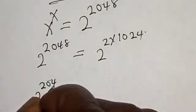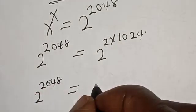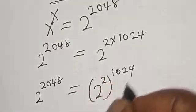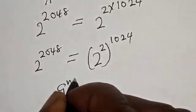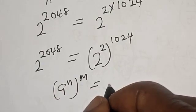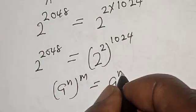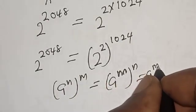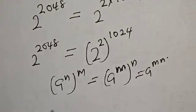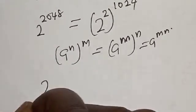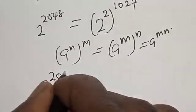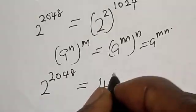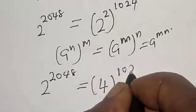2 raised to power 2048 is the same thing as 2 raised to power 2, raised to power 1024. Remember, if you have a raised to power n raised to power m, it is the same thing as a raised to power m raised to power n, which is the same thing as a raised to power m times n. So 2 raised to power 2048 is equal to 4 raised to power 1024.